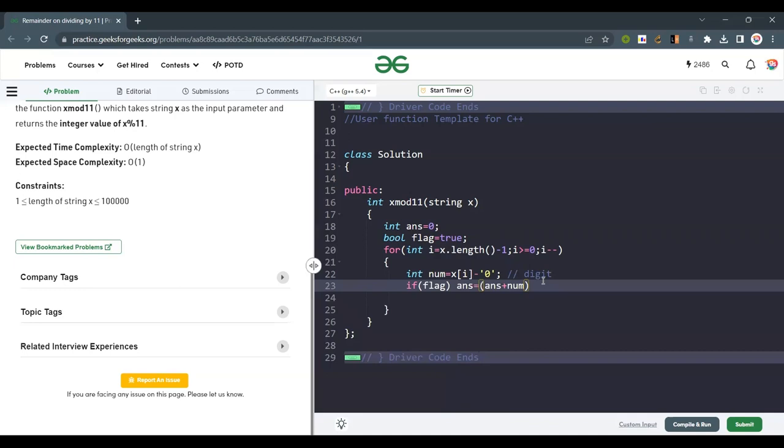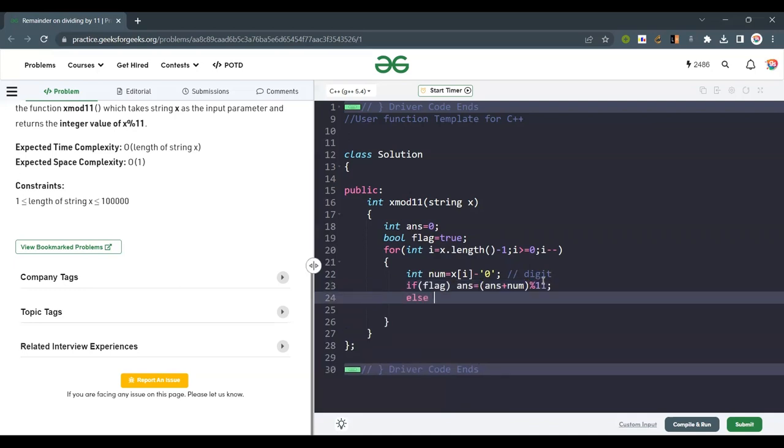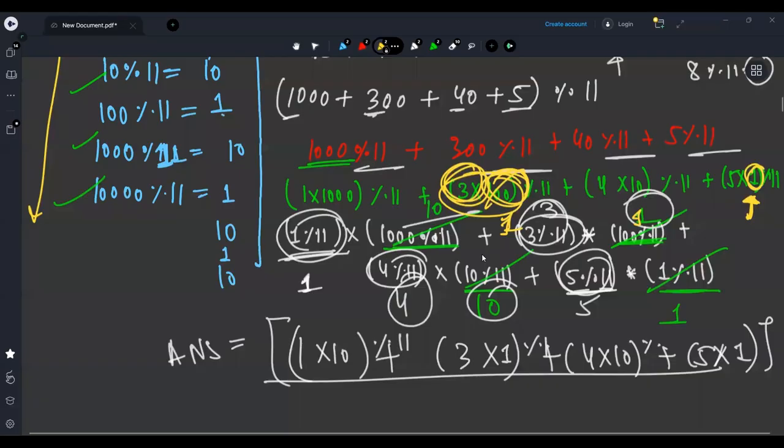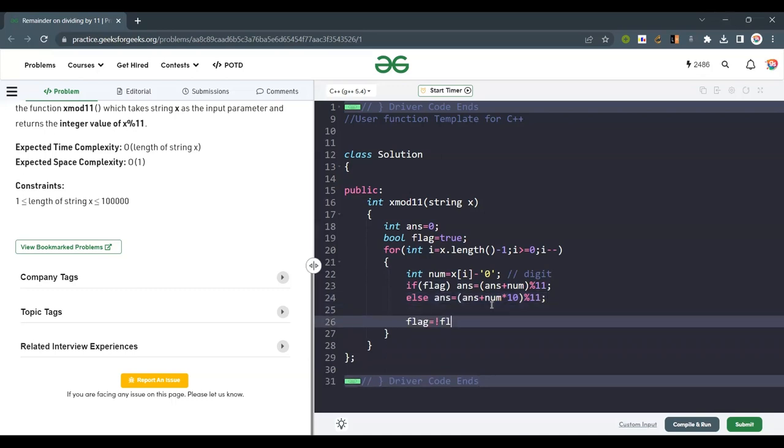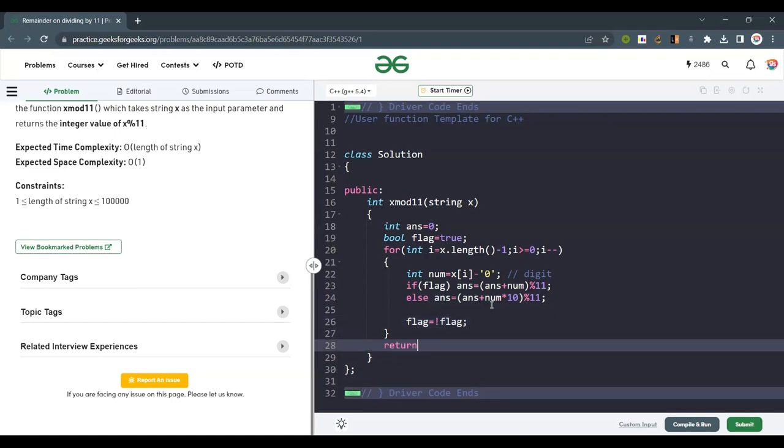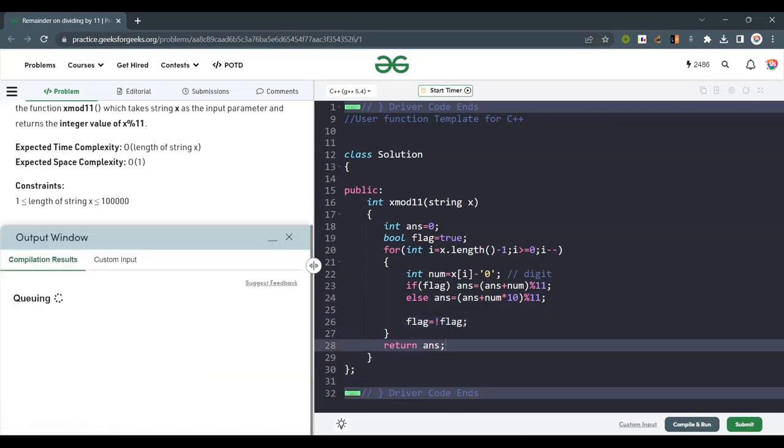If the flag is false, then just add the number by multiplying by 10, as I said. As I was doing 1 × 1000 mod 11, so 1000 can be written as 10. So 1 × 10 mod 11, like 4 × 10 mod 11. That's why for flag false I multiply by 10. And every time I will shift the flag: flag equals not flag. After that I will return the answer. So just combine it in the code.